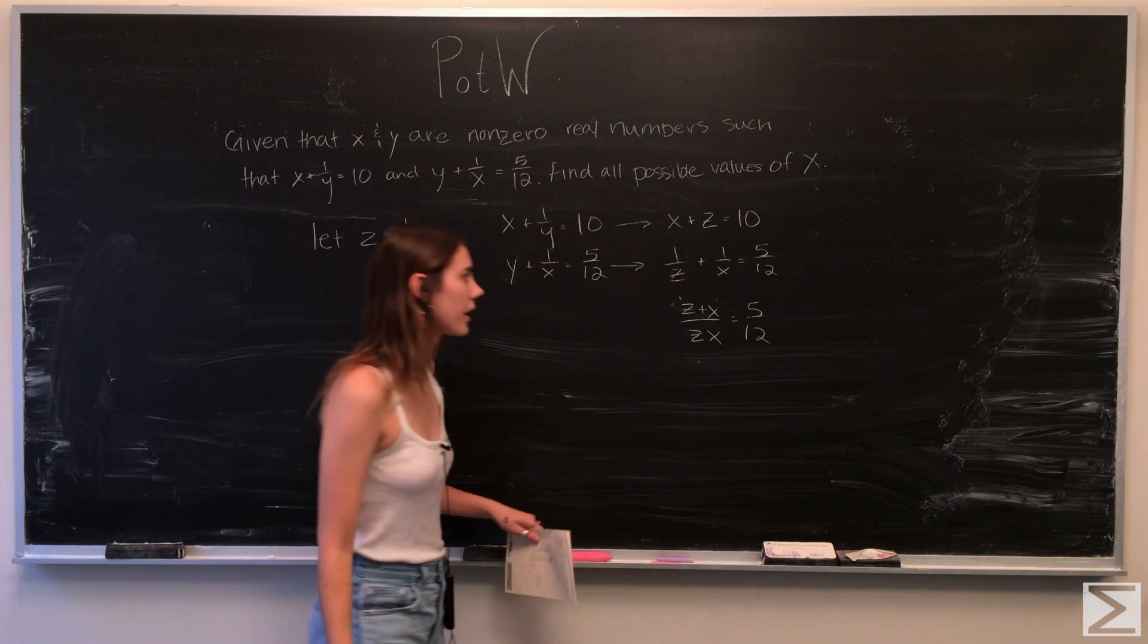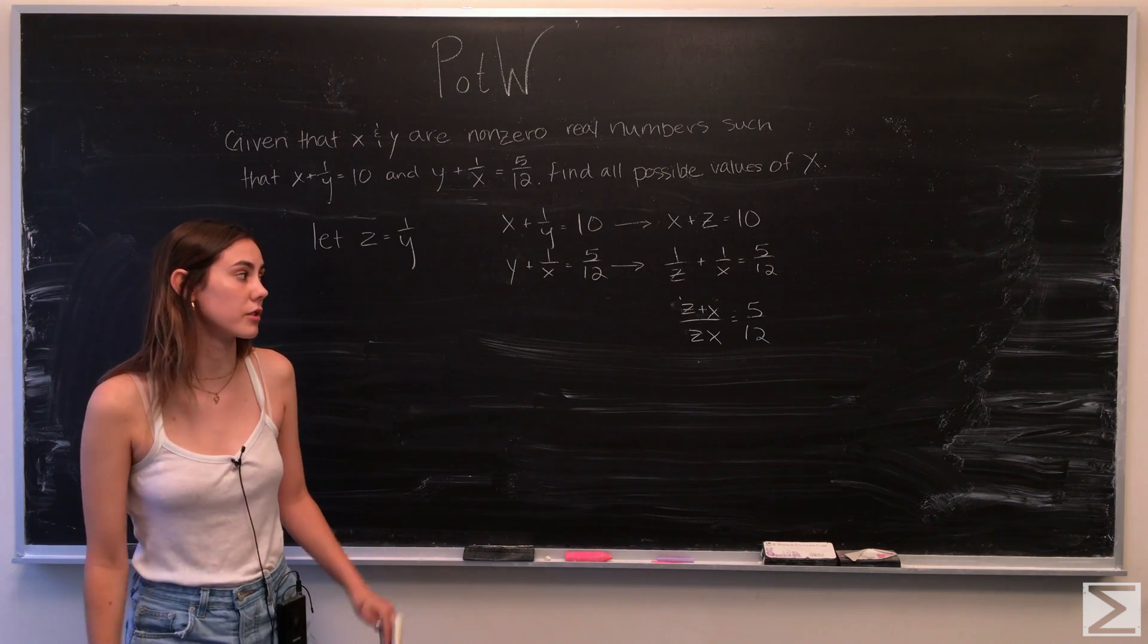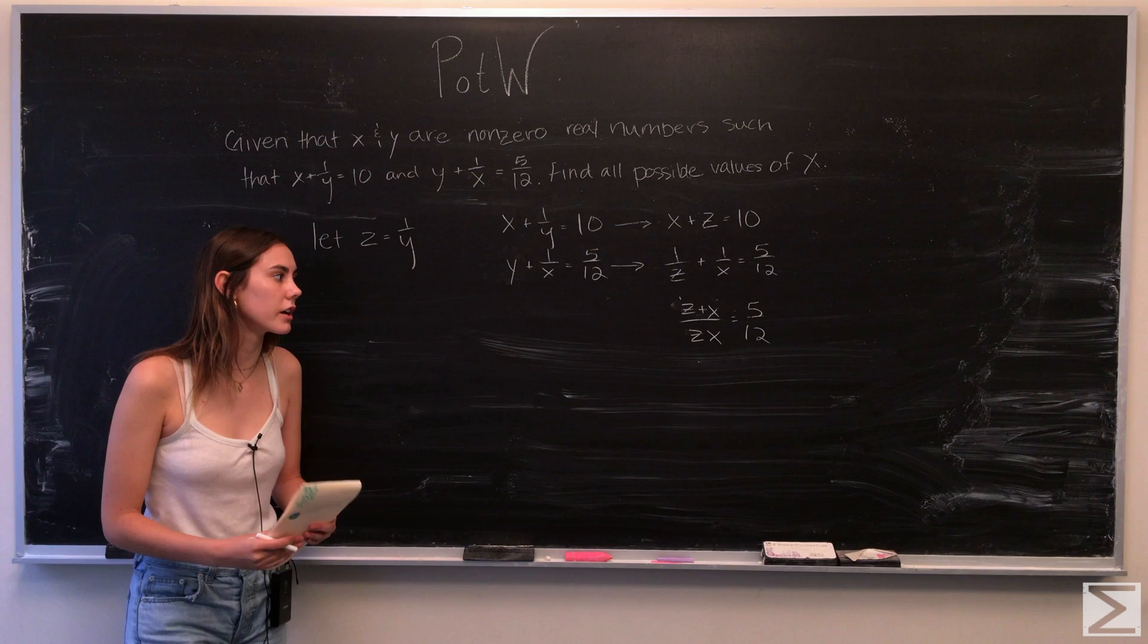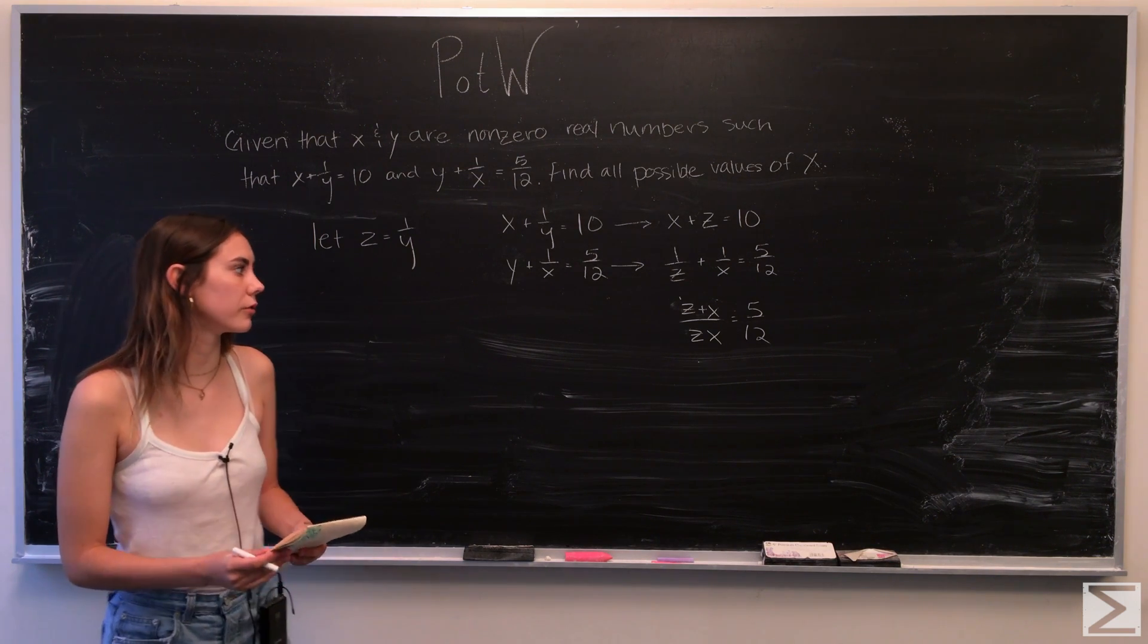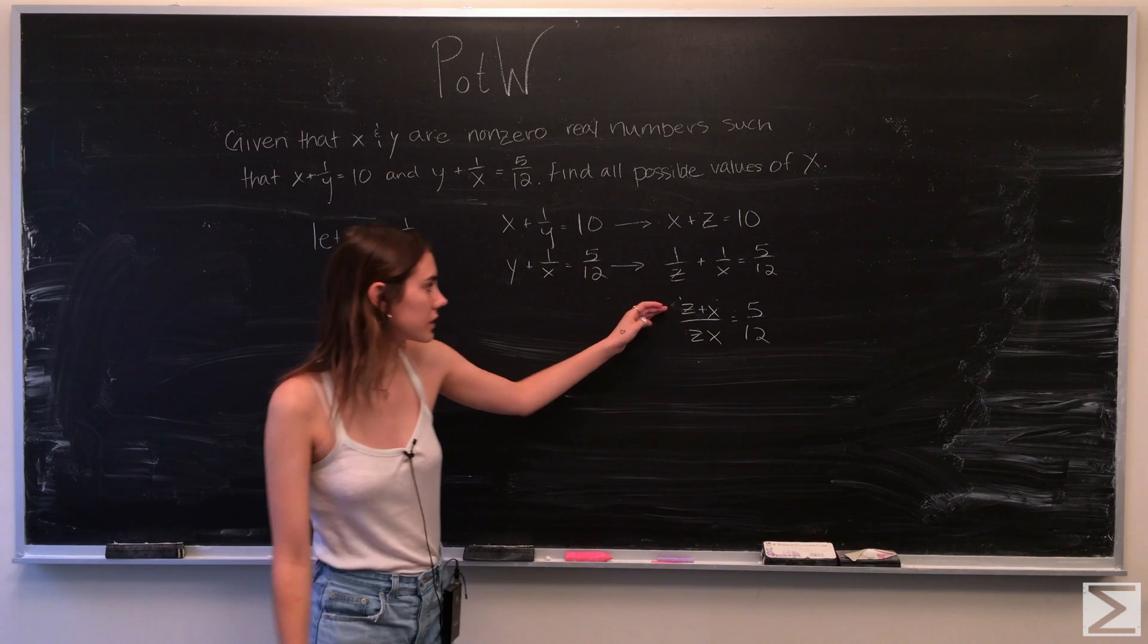So simplifying, we get z plus x over zx is equal to 5 over 12. We actually already have part of an equation for z plus x from above right here. So we know that this is equal to 10.